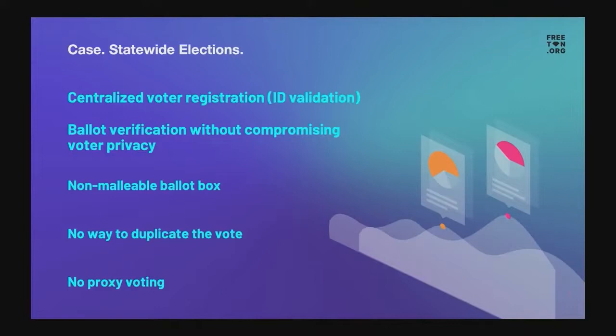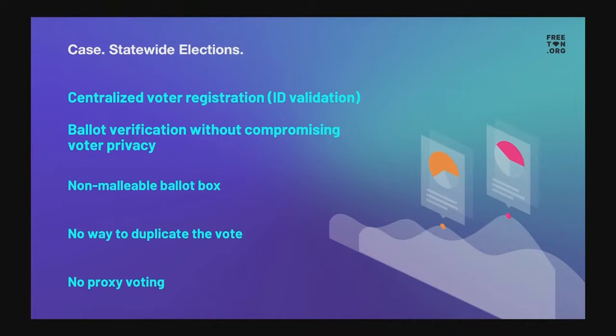Let's consider a particular voting case — statewide elections. These require officials to be sure the voter is eligible; the simplest way is to check their ID. Since this is also legally required, we can't ignore that. Next comes the necessity to avoid vote duplication and proxy voting, then ballot box non-malleability to trust voting results, and finally a requirement to avoid disclosure of voters' identity using their ballot only — we can't let anyone know who voted for whom, but we need a valid way to see valid results.